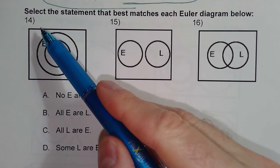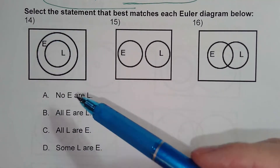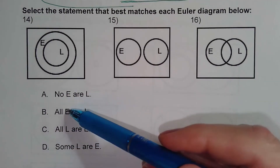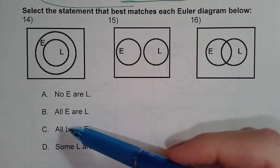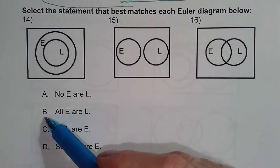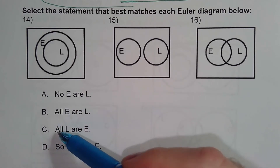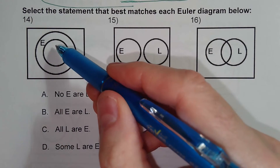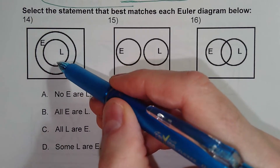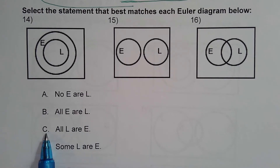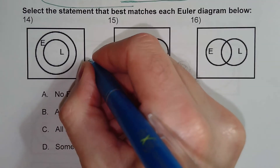For number 14, because it's an 'all' or 'if-then' statement, that already eliminates A and D. Either it's 'all E are L' or 'all L are E.' Since L is inside, it has to go first — it has to be 'all L are E.' So for number 14 the answer would be C.